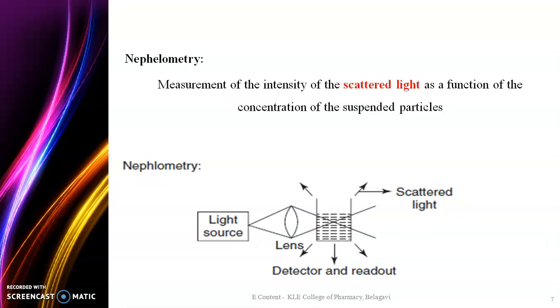In Nephelometry the measurement of the intensity of scattered light as a function of the concentration of the suspended particles is done. The light source emits radiation which is absorbed, transmitted, and refracted by the sample and then whatever light has been scattered will be measured by the detector.